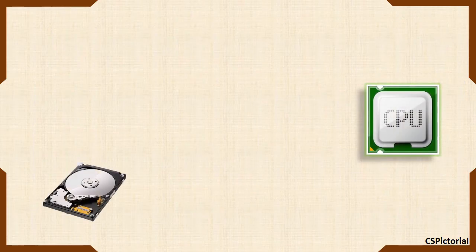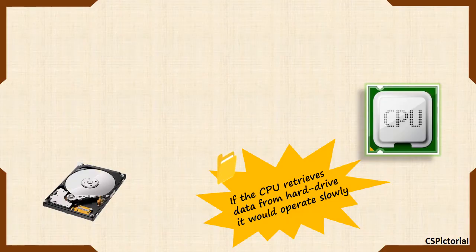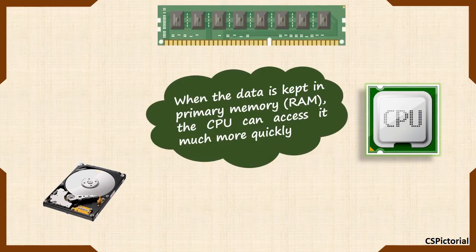Now it's time to find out how these memory devices work with the CPU. As we had seen already, the secondary storage devices are slower. If the CPU gets all its data from the hard drive, it would operate very slowly. So the data is kept in the main memory — the RAM — so that the CPU can access it faster.